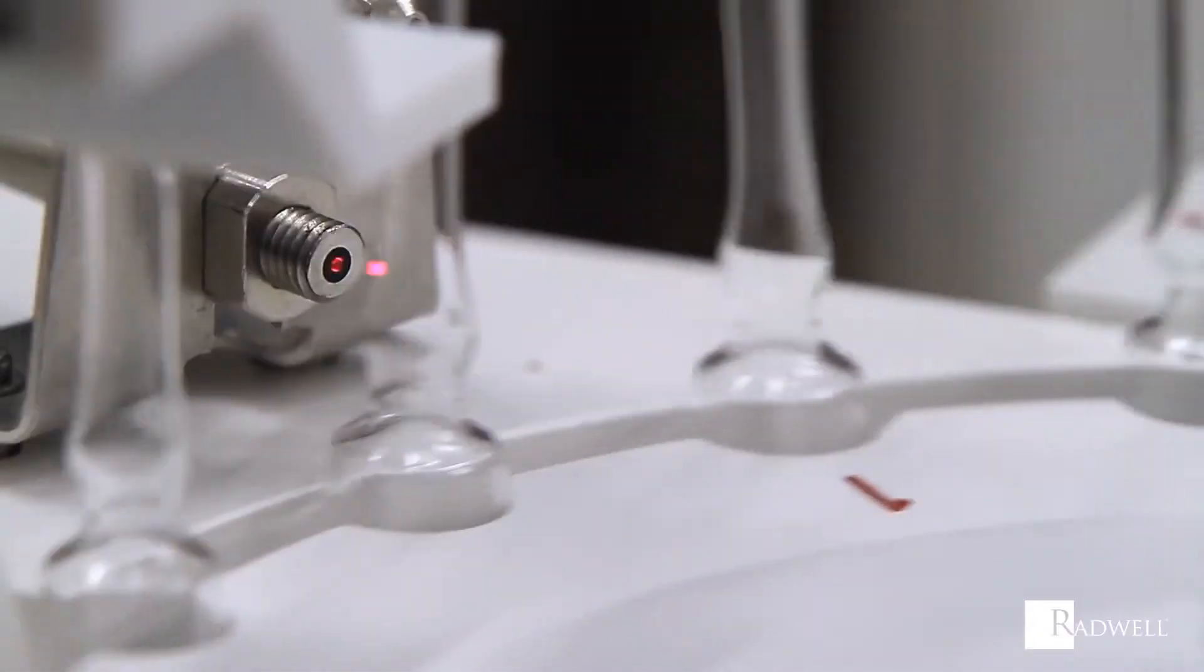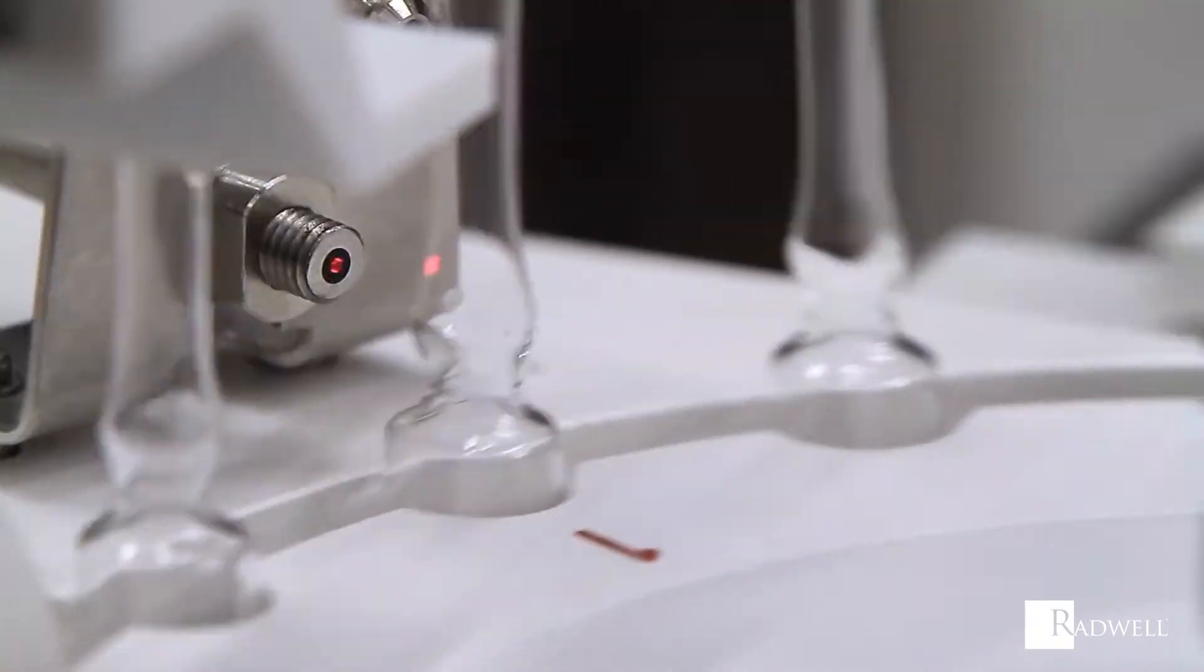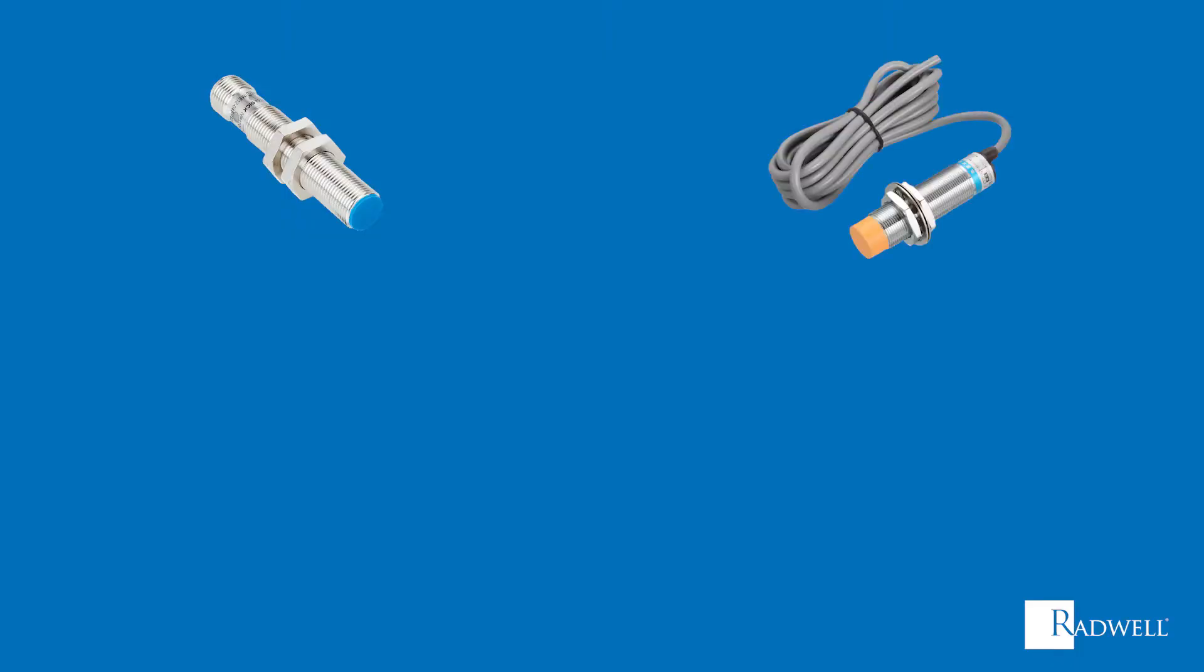How a proximity sensor detects the object is what separates proximity sensors into types. The five main types of sensors are inductive, capacitive, optical, magnetic, and ultrasonic.